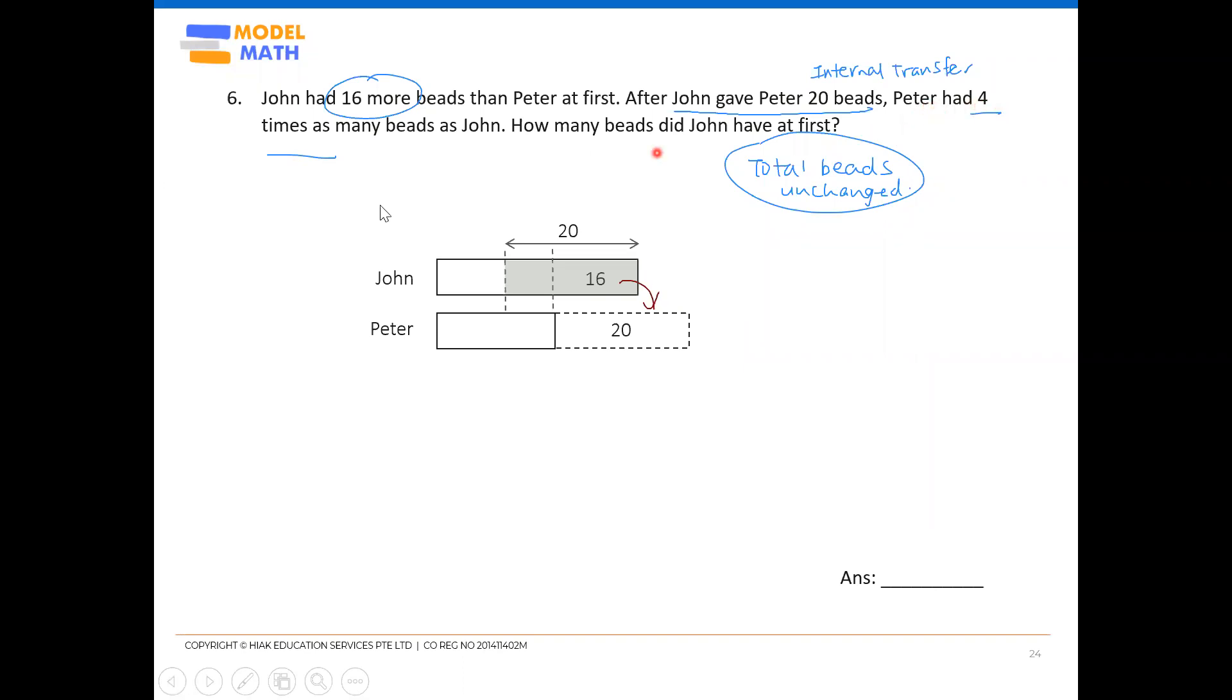Now let's look at what happened in the end. In the end, Peter had four times as many beads as John. Peter had four times means Peter had four units in the end. Now Peter's model in the end, this whole thing is in the end. Can I easily cut it into four units? You realize I can't. It's difficult because of this extra 20 here. It's going to be difficult for me to cut it into equal parts. So you do not need to cut.